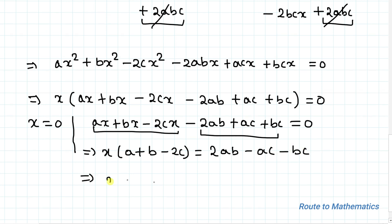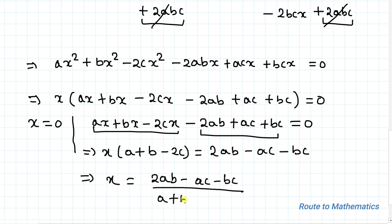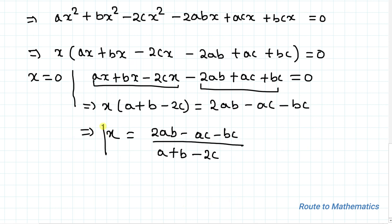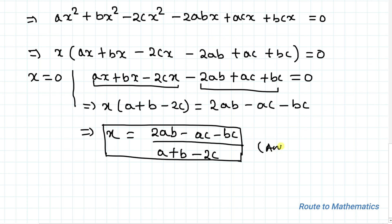Therefore x = (2ab − ac − bc) / (a + b − 2c) is the second solution of x in terms of a, b, c — and that is our answer. I hope you have understood the solution. Thanks for watching — please subscribe to my channel and click the bell icon for more such interesting videos. Thank you.